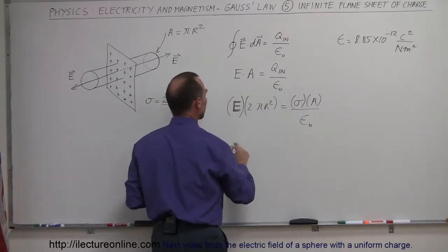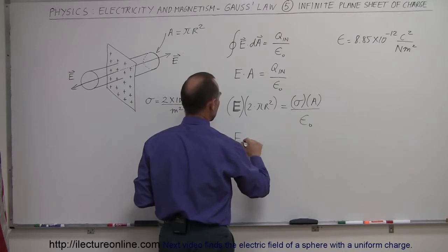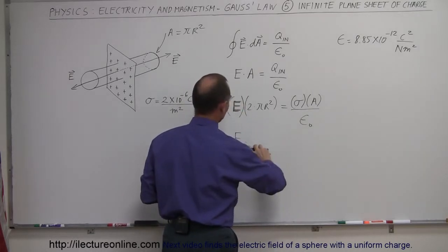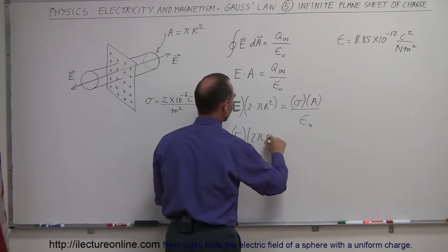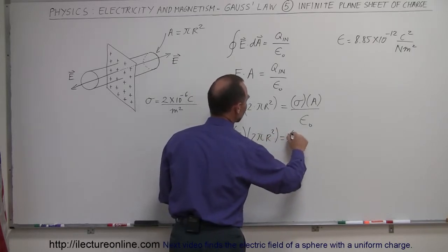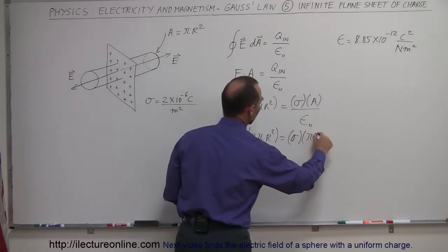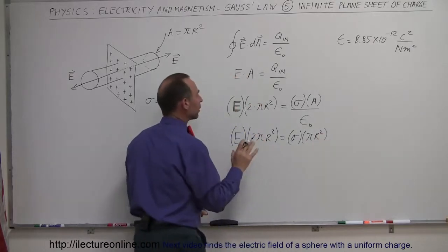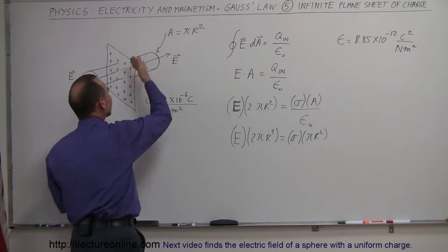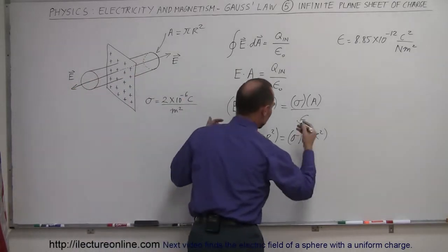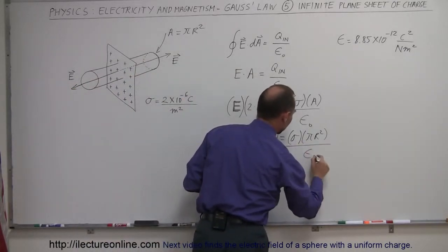Now remember that the area here was also going to be pi r squared. So we have E times 2 pi r squared equals sigma times pi r squared, because now we're only talking about the charge density on each side of the surface divided by epsilon sub nought.